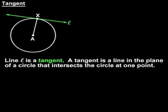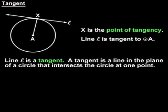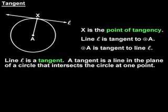A tangent is a line in the plane of a circle that intersects the circle at one point. In this case, the tangent intersects the circle at point x. Point x is called the point of tangency. We say that line L is tangent to circle A, and we can also say that circle A is tangent to line L.